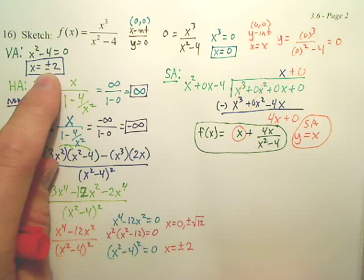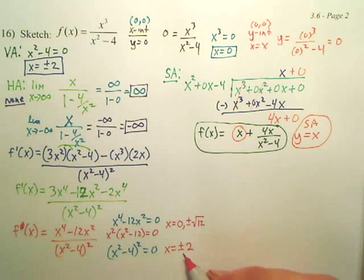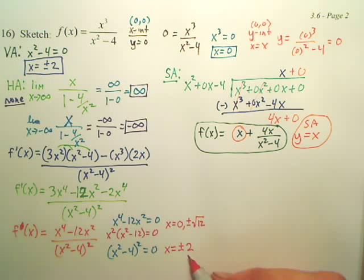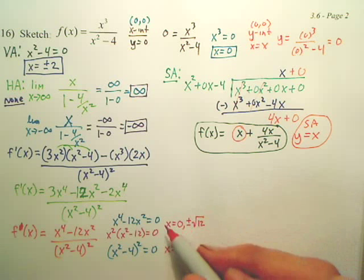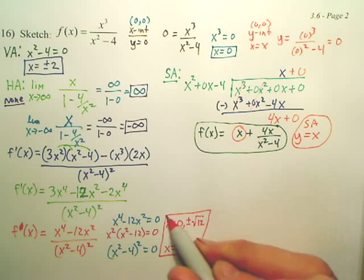Now, are those already vertical asymptotes? So, are these critical numbers? No, but are they still important to put on my table? Yes, because at asymptotes, can characteristics of your graph change? Yes. These are not critical numbers, but they're still important for us in what we're going to get into.